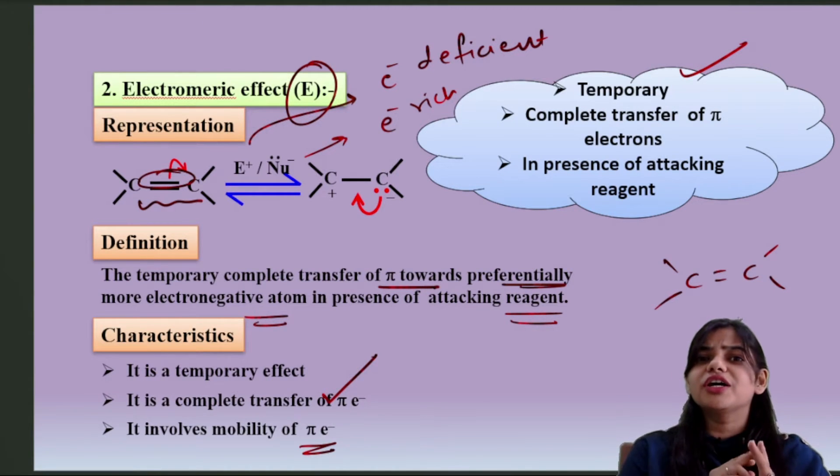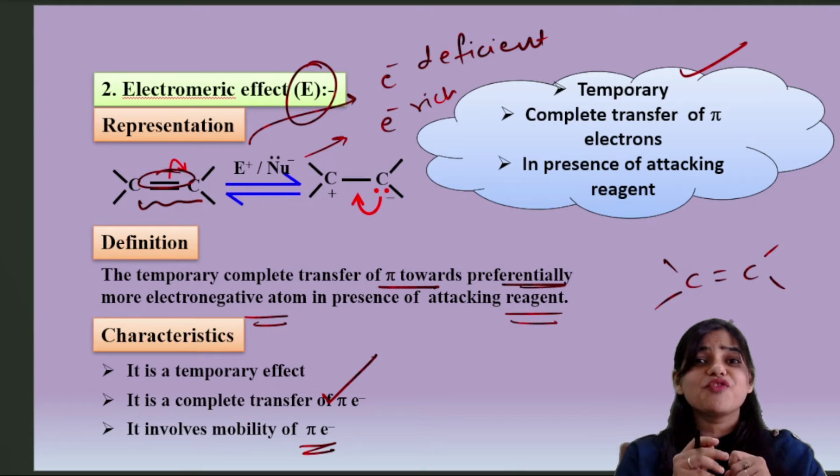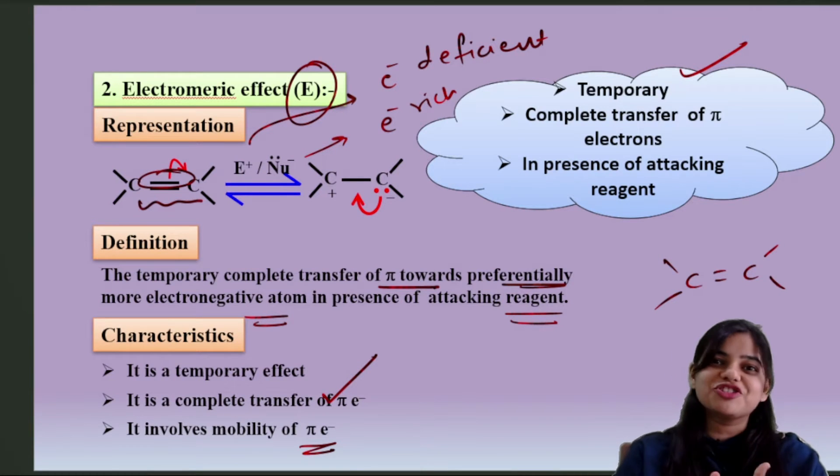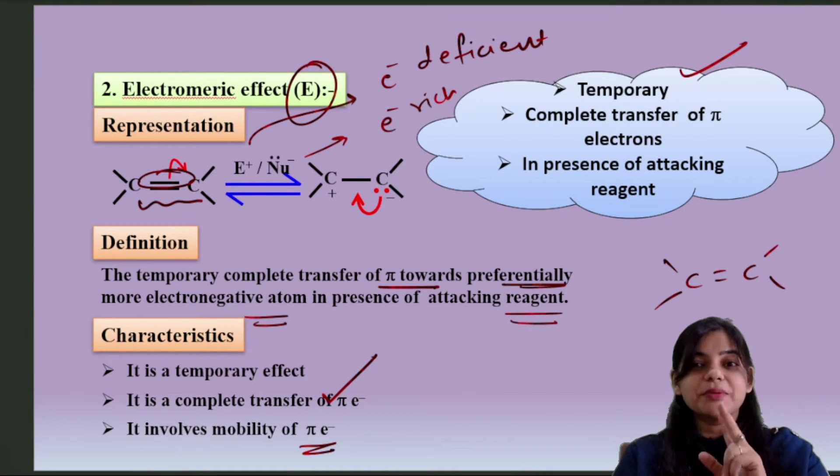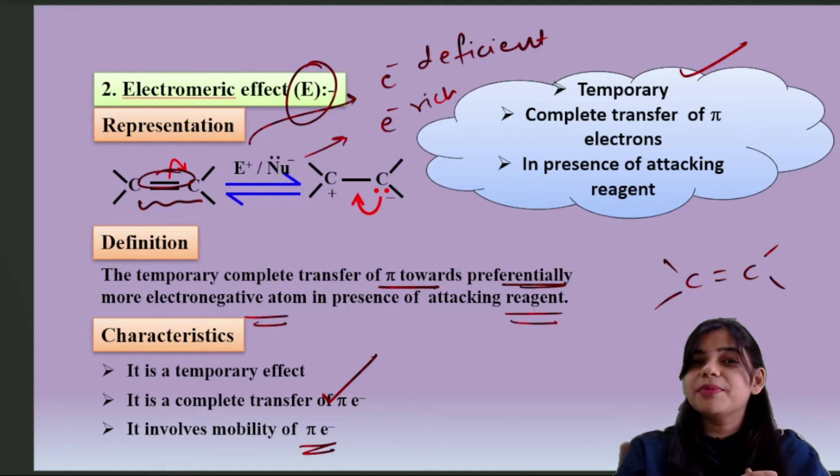It involves mobility of pi electrons. So this is like reverse of inductive effect. If you have not seen the video of inductive effect you can check that. Inductive effect is permanent, there is partial displacement of electron, and it is a permanent effect and there is mobility of sigma electrons in that.